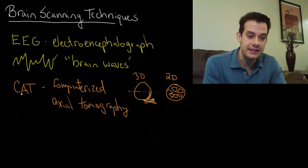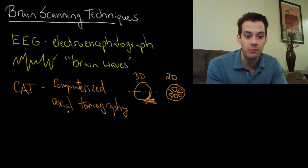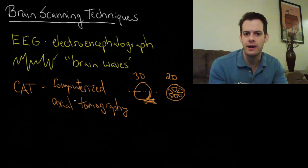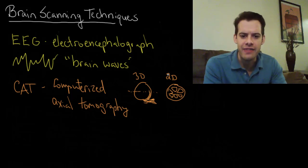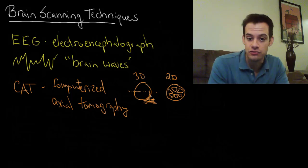So what a CAT scan does is it does this with the brain using x-rays. So we send x-rays through at a number of different angles. That's where the axial refers to. We send x-rays through different axes and then that gives us these 2D pictures that reveal the structure. So we can see the densities of different areas and from that we can figure out the structure.